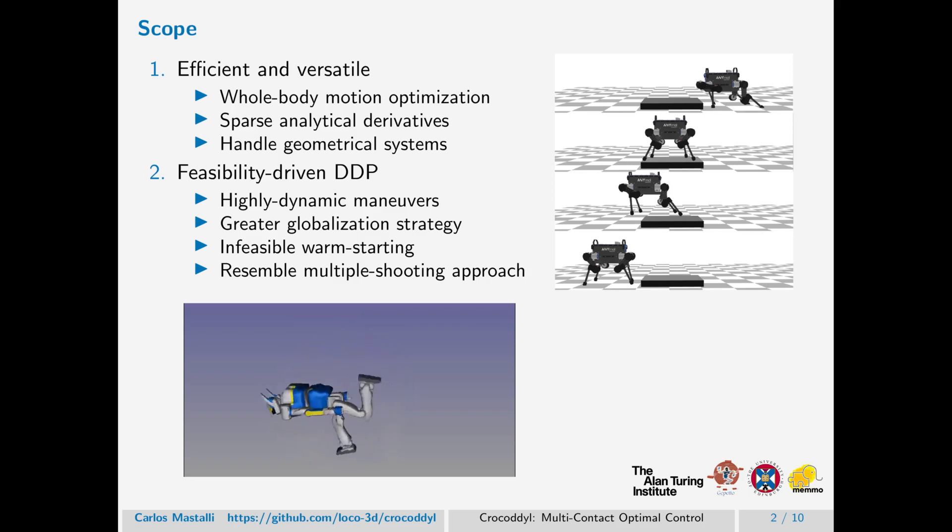It uses sparse analytical derivatives to boost the computation time needed for model predictive control applications. It also handles geometrical systems which removes the singularity produced by an Euler orientation description.